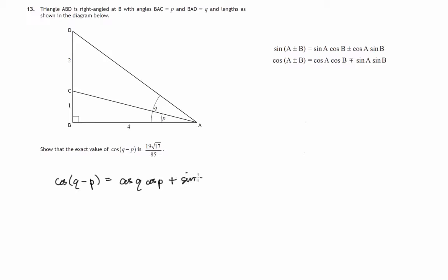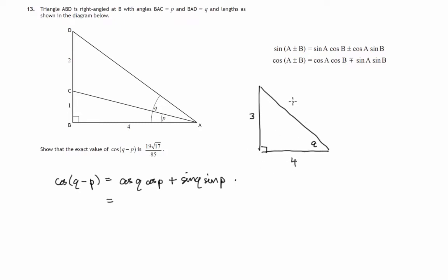So the expansion gives us cos Q cos P plus sine Q sin P. We've got various cosines and sines of angles Q and P to find. Let's extract the relevant right angle triangles. The large one has angle Q, with sides three, four, and five — since three squared plus four squared equals five squared, it's a 3-4-5 triangle. The smaller right angle triangle has angle P, with sides one and four, giving a hypotenuse of √17 by Pythagoras's theorem.